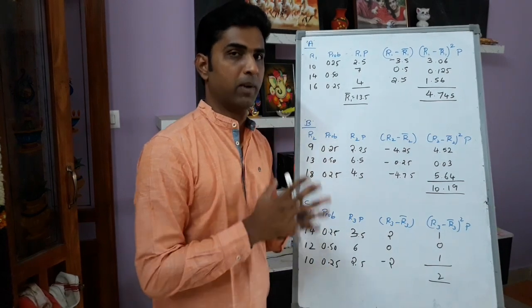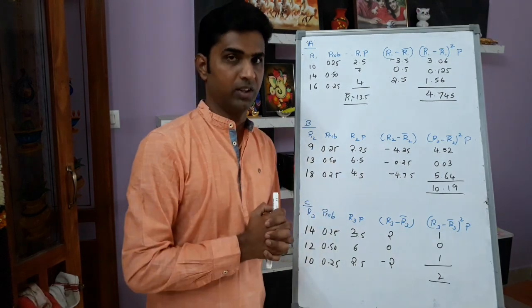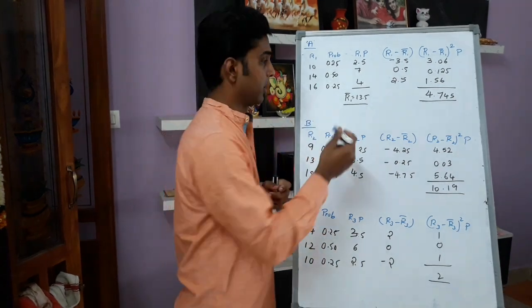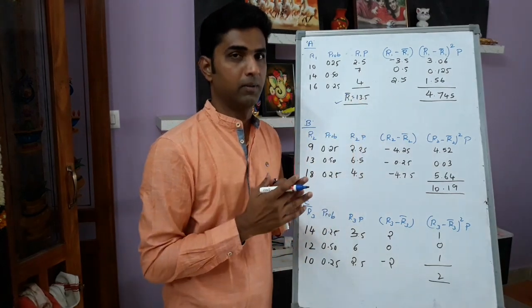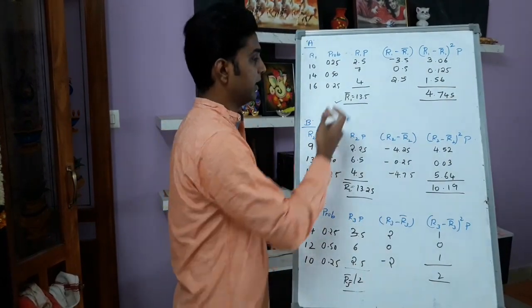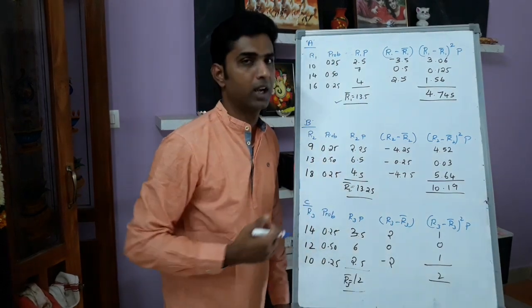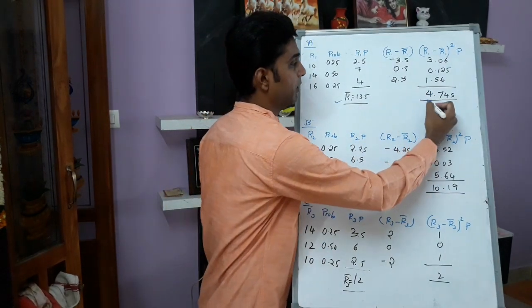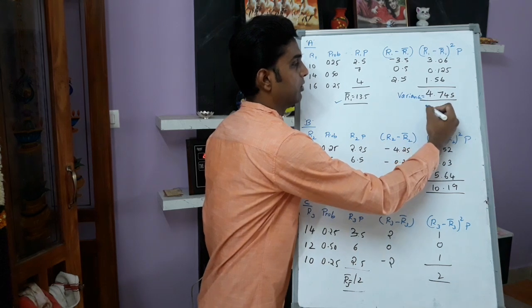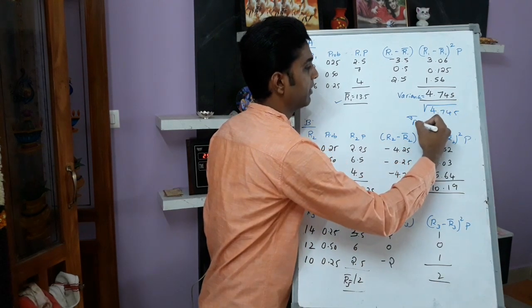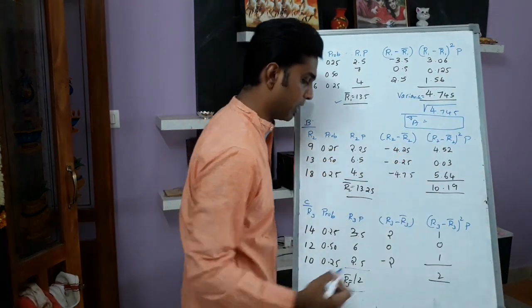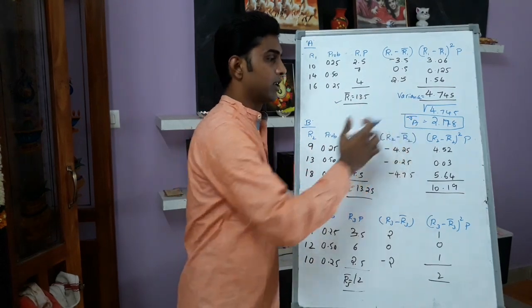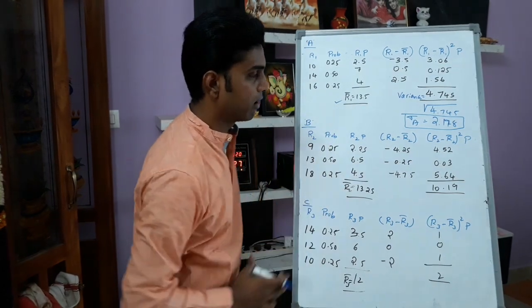First question is expected rate of return for each security and risk of each security. Expected rate of return is R1 bar, R2 bar, R3 bar, separately for A, B, and C. R1 bar, expected rate of return of company A, is 13.5. Standard deviation formula is applied; this is variance. Square root of variance is nothing but standard deviation of A. Standard deviation of A is square root of 2.178. Company A: expected rate of return is 13.5, standard deviation is 2.178.